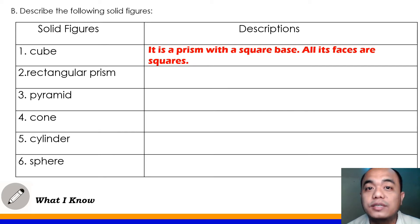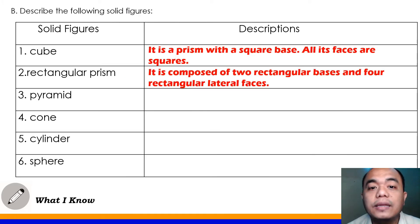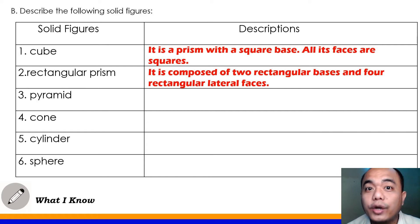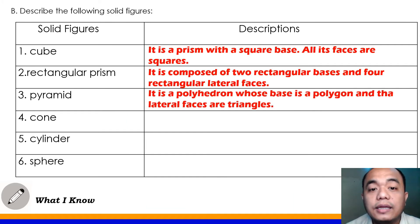That is how to describe a cube. Rectangular prism — it is composed of two rectangular bases and four rectangular lateral faces. Next, pyramid. I know the word pyramid is somewhat common to you. How do you describe pyramid? It is a polyhedron whose base is a polygon, and the lateral faces are triangles.